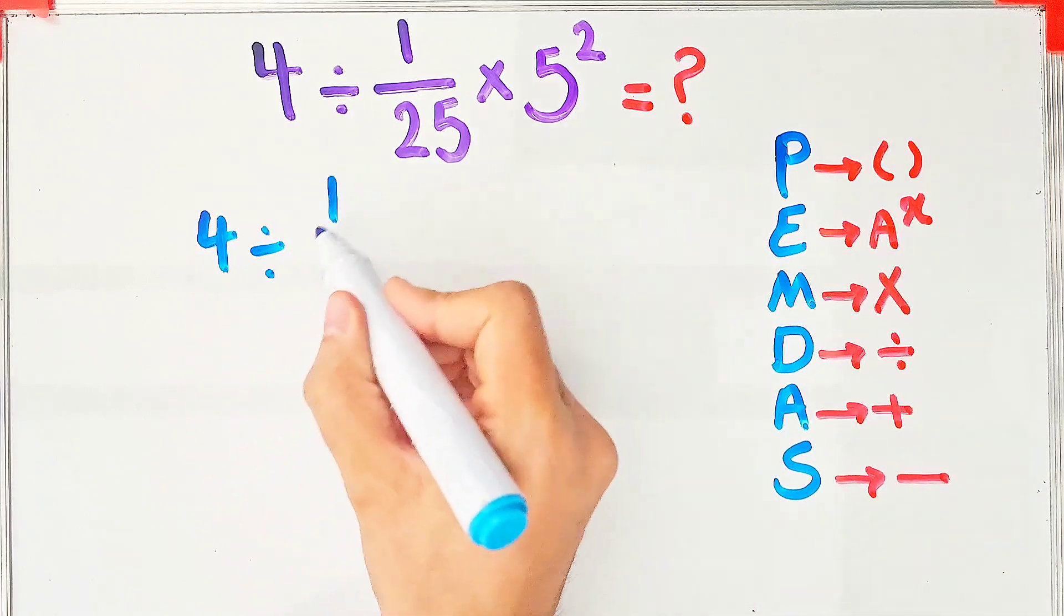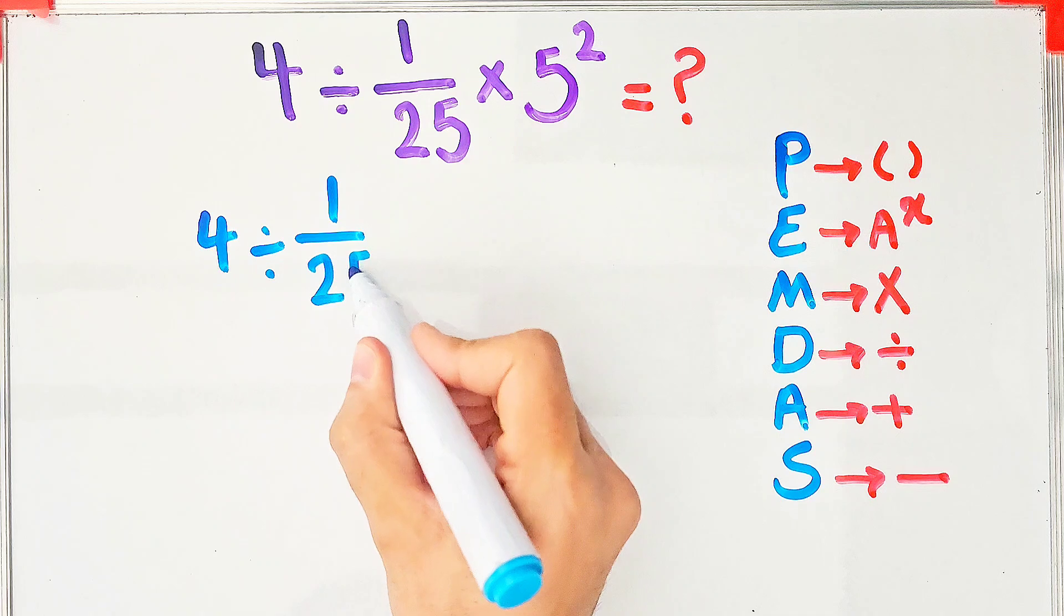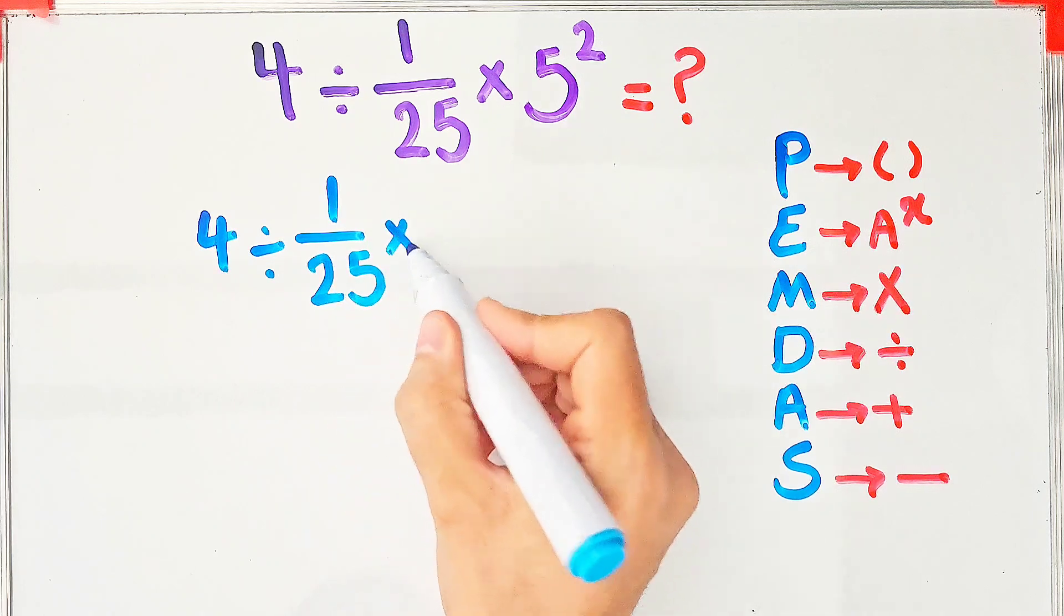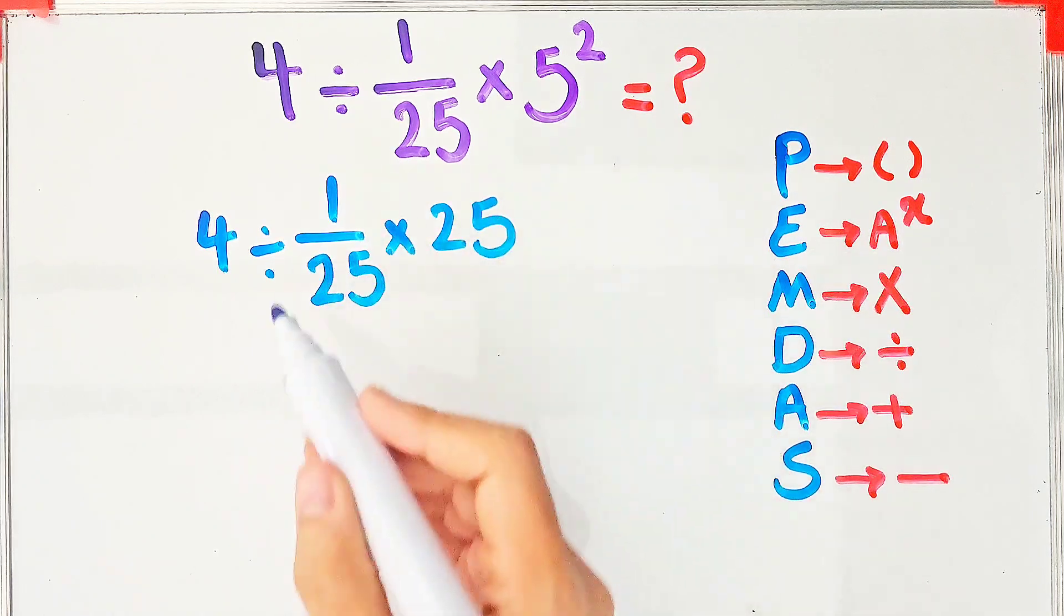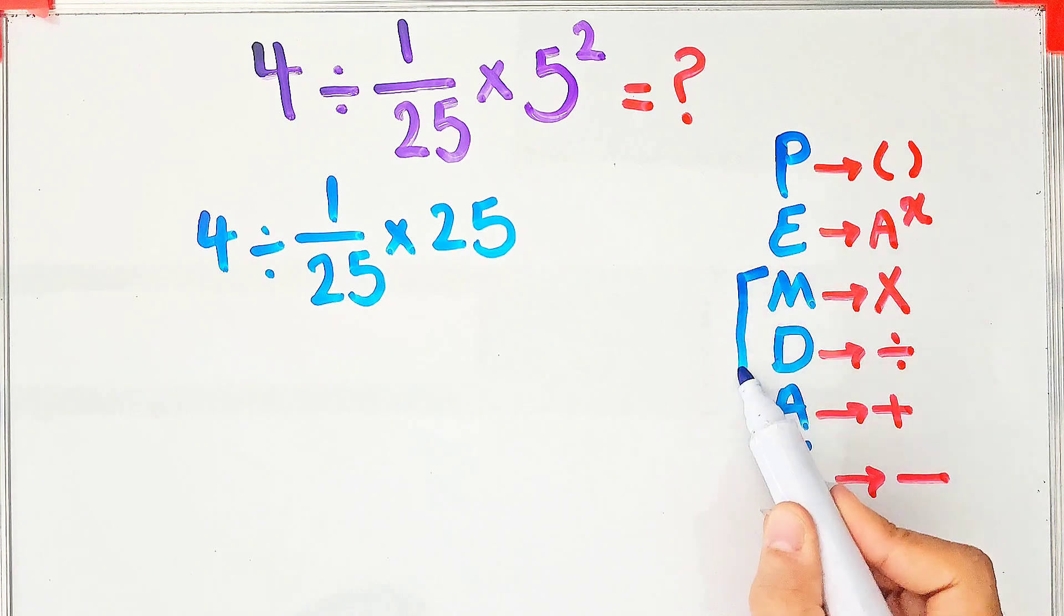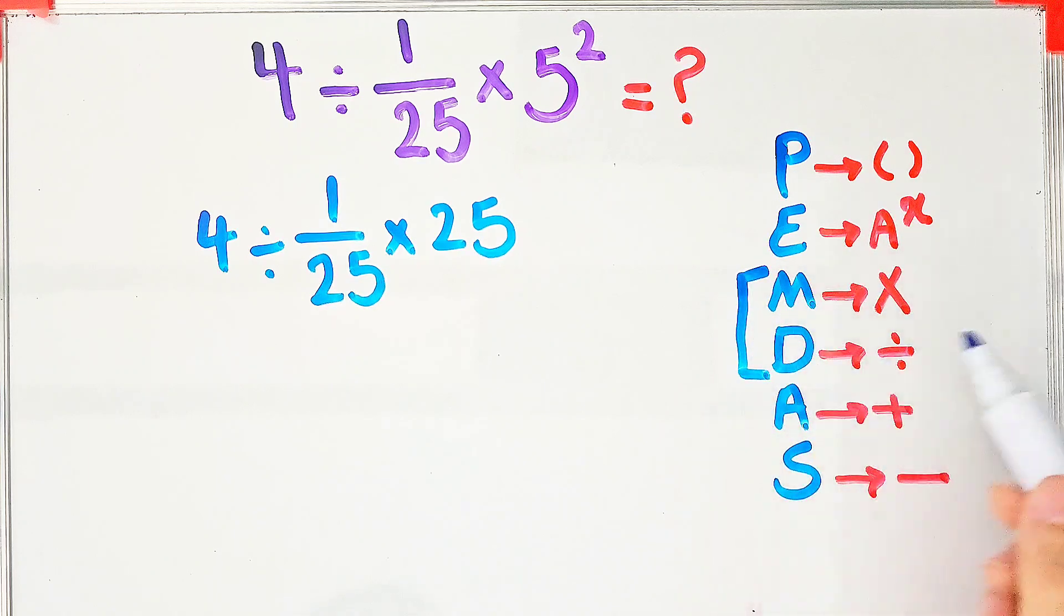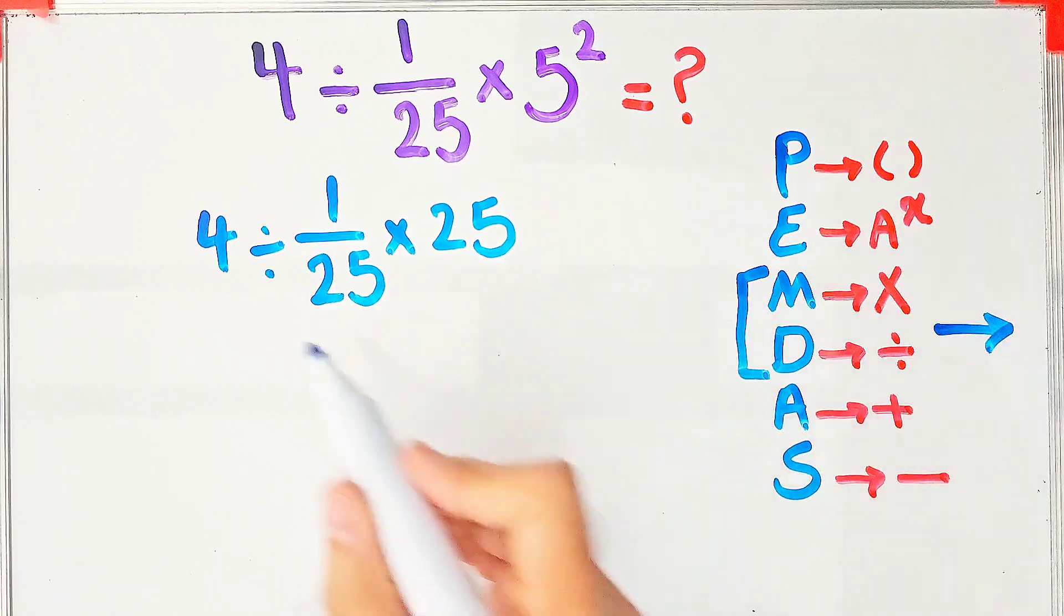In this step, because we have division and multiplication, we start from the left and simplify the question, because multiplication and division have the same level of priority.